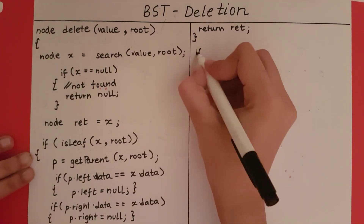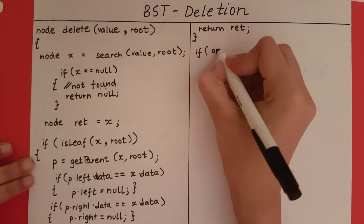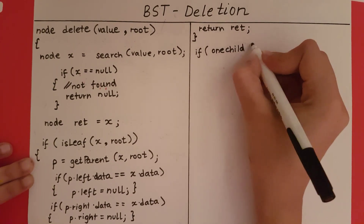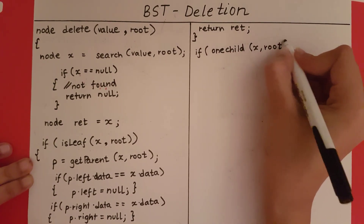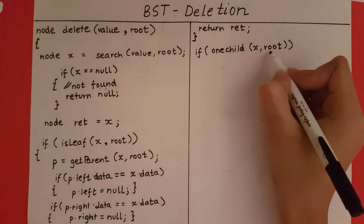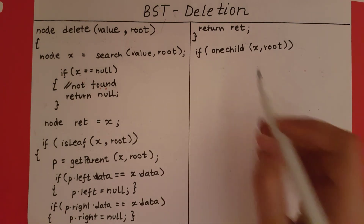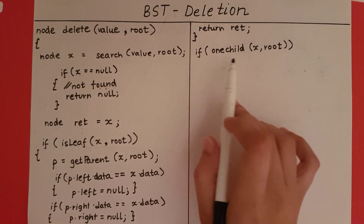Next we check if x is a node with only one child. This is another function you can write externally — it checks whether x has only one child in the tree with this root. This can be done by checking whether the left is null and the right is not null, or the right is null and the left is not null. It returns true or false based on whether x has only one child.